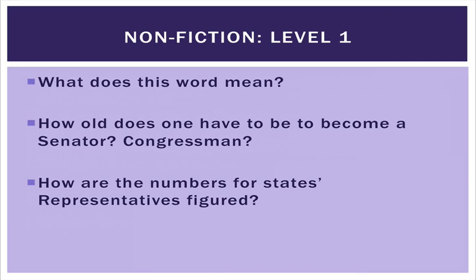In a nonfiction text, level one questions might be: 'What does this word mean?' or 'How old does one have to be to become a senator or congressman?' These are questions you could ask of the text to check your knowledge, and the answers would be explicitly stated. There's not going to be any governmental textbook that implies how old you have to be to become a senator — they're going to say it explicitly. If you can question the text and go back to find that answer, you're on the right track to understanding it more fully.